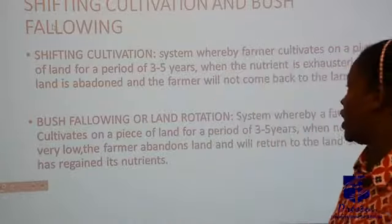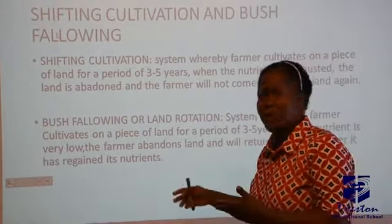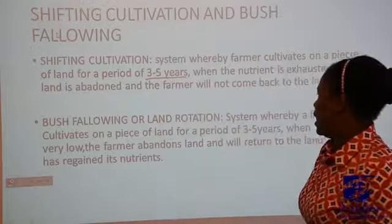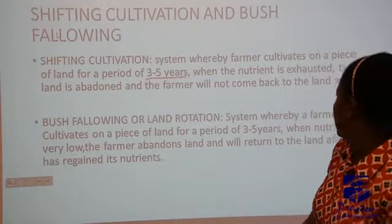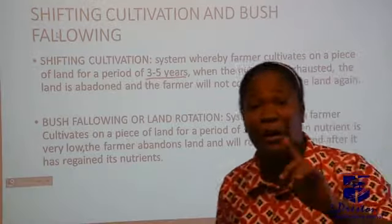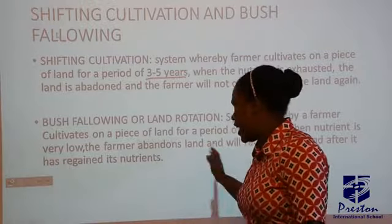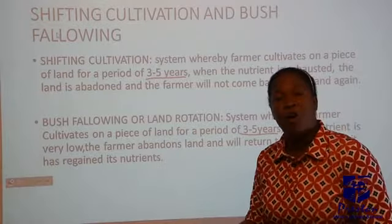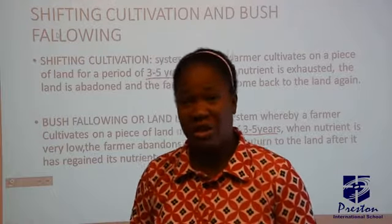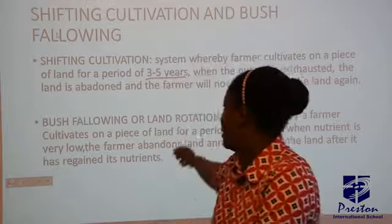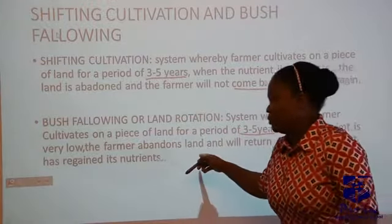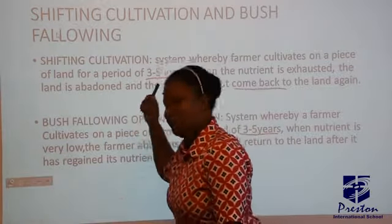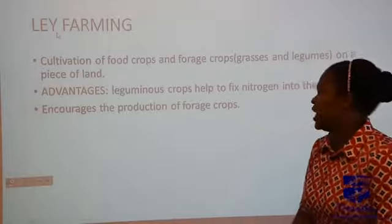Now shifting cultivation and bush fallowing — these look alike, so note the differences. Shifting cultivation is a system where the farmer cultivates land for three to five years; when nutrients are exhausted, the land is abandoned and the farmer does not return to it. Bush fallowing — also called land rotation — the farmer also farms for three to five years and abandons the land when nutrients are exhausted, but then returns to the land once it has regained its nutrients. The key difference: shifting cultivation — farmer never returns; bush fallowing — farmer returns.